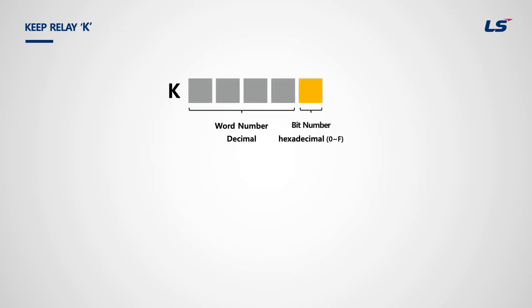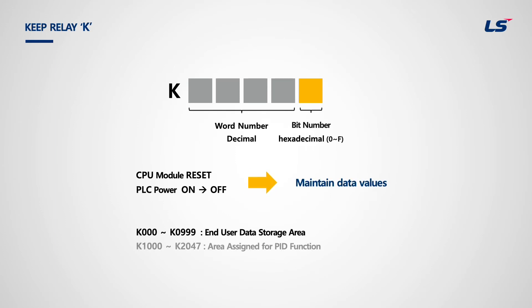Next is keep relay K. It retains data during power failure and can be used without setting a separate retaining parameter. The reset switch in the CPU module will reset all data and clear memory other than keep relay to zero. K memory will hold the last data, and when the CPU is in run mode, it will continue processing with the previous data.